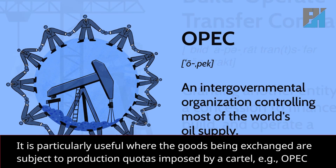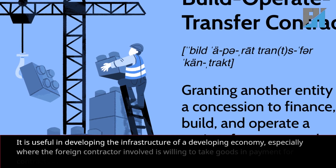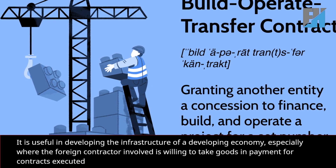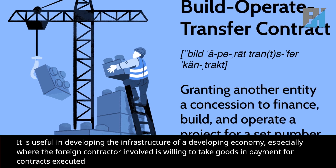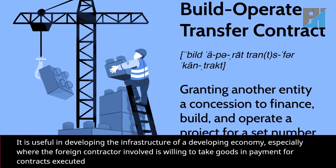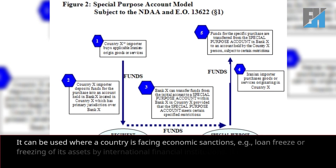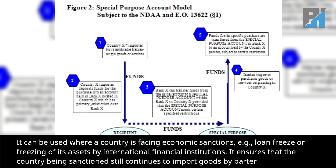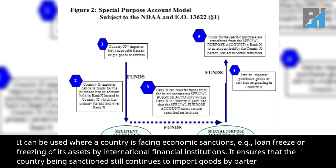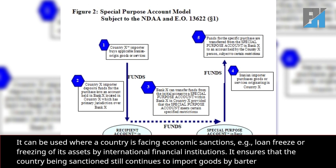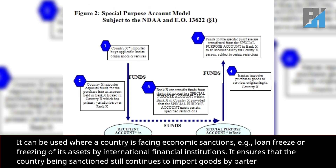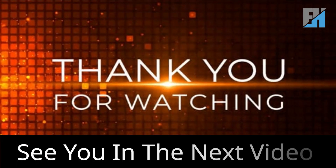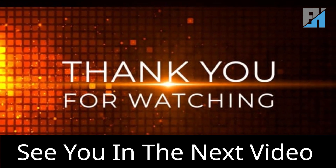It is particularly useful where the goods being exchanged are subject to production quotas imposed by a cartel, e.g., OPEC. It is useful in developing the infrastructure of a developing economy, especially where the foreign contractor involved is willing to take goods in payment for contracts executed. It can be used where a country is facing economic sanctions, e.g., loan freeze or freezing of its assets by international financial institutions — it ensures that the country being sanctioned still continues to import goods by barter. Thanks for watching, see you in the next video.